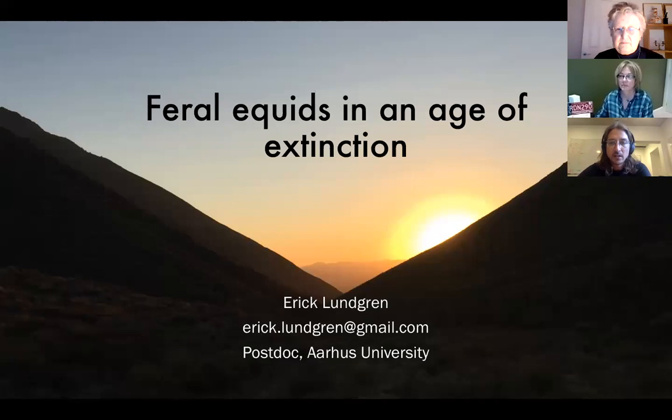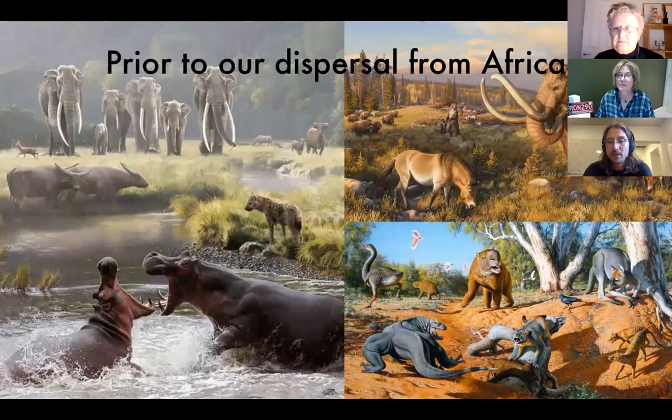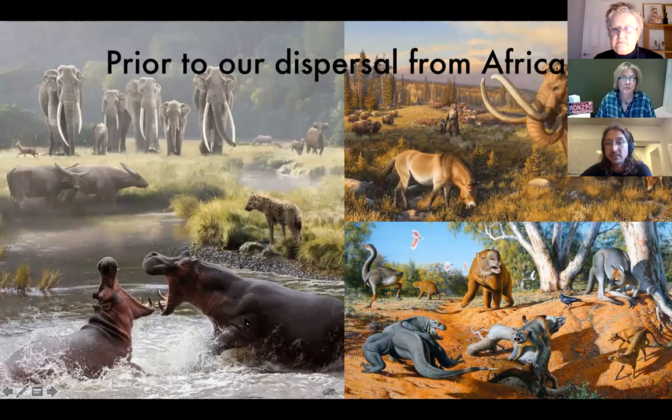I want to start by going back in time. If you look at the world before we dispersed from Africa, it looked very different than it does today. This is what England may have looked like — these species are present in England 117,000 years ago. North America had horses, several species, up to five species of horses, musk oxen, ground sloths, mammoths. And Australia, of course, had its own diversity of animals.